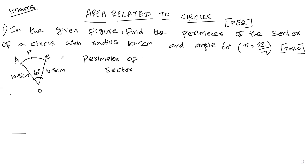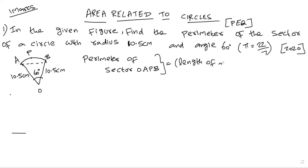The perimeter of the sector: total value is OA plus AP plus PO. The radius portions are the two straight sides, and the arc is the curved part. The arc length formula is: theta by 360 into 2 pi r. So perimeter equals arc length plus radius plus radius, which is theta by 360 into 2 pi r, plus 10.5 plus 10.5.